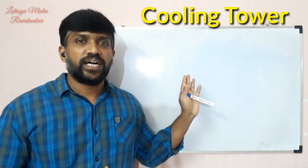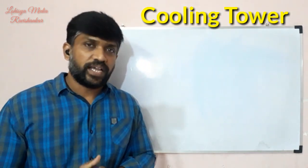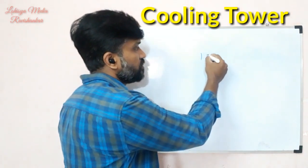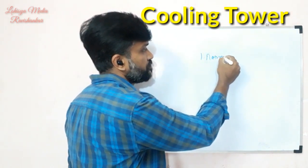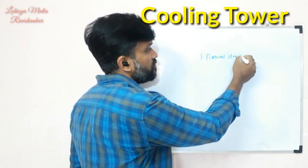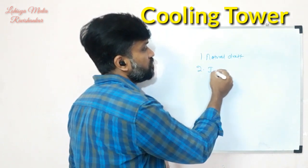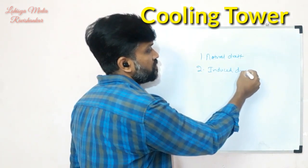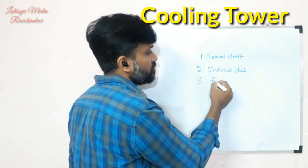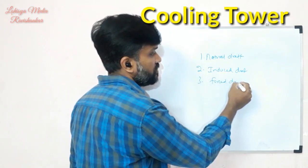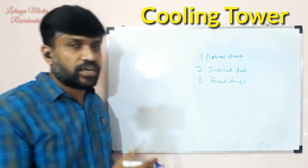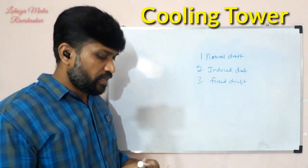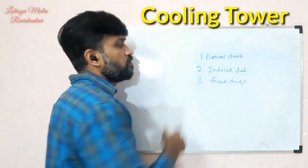Now, what are the basic types of cooling towers? The first type is natural draft. The second type is induced draft. The third type is forced draft. So the three main types are: natural draft, induced draft, and forced draft.